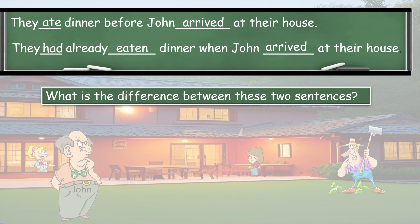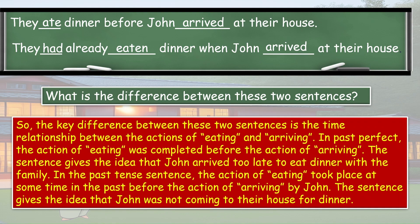What is the difference between these two sentences? The key difference is the time relationship between the actions of eating and arriving. In the past perfect, the action of eating was completed before the action of arriving — the sentence gives the idea that John arrived too late to eat dinner with the family. In the past tense sentence, the action of eating took place at some time in the past before John's arrival, giving the idea that John was not coming to their house for dinner.